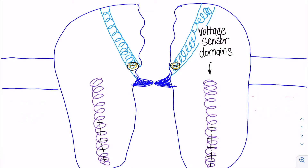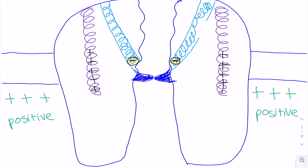Conversely, when the inside of the cell becomes more positive, the voltage sensor senses the change in charge and allows the gate to open.